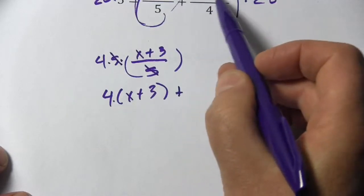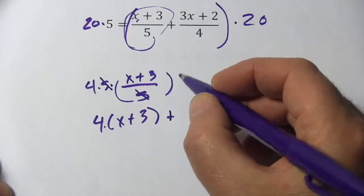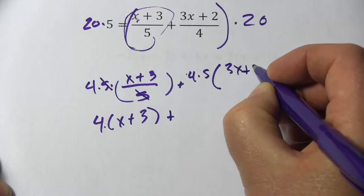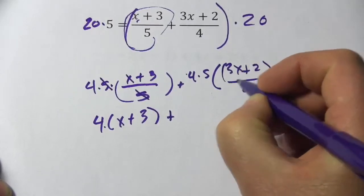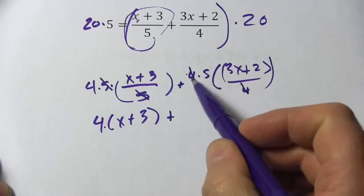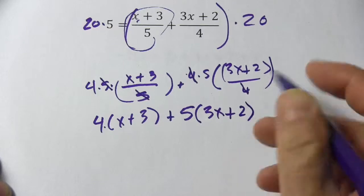Now we've got the next chunk, 3x plus 2 over 4. That's also being multiplied by 20. Again, I'm going to write that as 4 times 5 times 3x plus 2 over 4. And here, it's the 4s that cancel, so this becomes 5 times 3x plus 2.